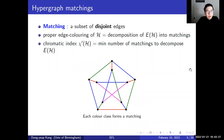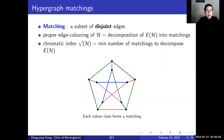One can express terminology on edge coloring in terms of matchings. A matching is a subset of disjoint edges. If one considers the set of edges with the same color in a proper edge coloring, because no two intersecting edges have the same color, a proper edge coloring is just a decomposition of the edge set into matchings. Similarly, the chromatic index of a hypergraph is the minimum number of matchings which decompose the edge set.